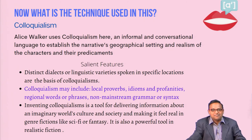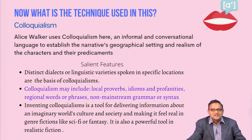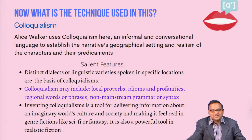Especially many third-world country writers make use of colloquialism. You can see it in Nissim Ezekiel's Indian English poems, in Chinua Achebe's 'Things Fall Apart,' and in Toni Morrison, though not to the extent Alice Walker uses it here. The use of language in the novel closely mimics the use of language of the people it represents. It is more informal and conversational, and in order to bring out an authentic flair and flavor of the character, the writer mimics the language used in a particular geographical setting. You identify it by distinct dialects, idioms, profanities, regional words, and non-mainstream grammar and syntax.